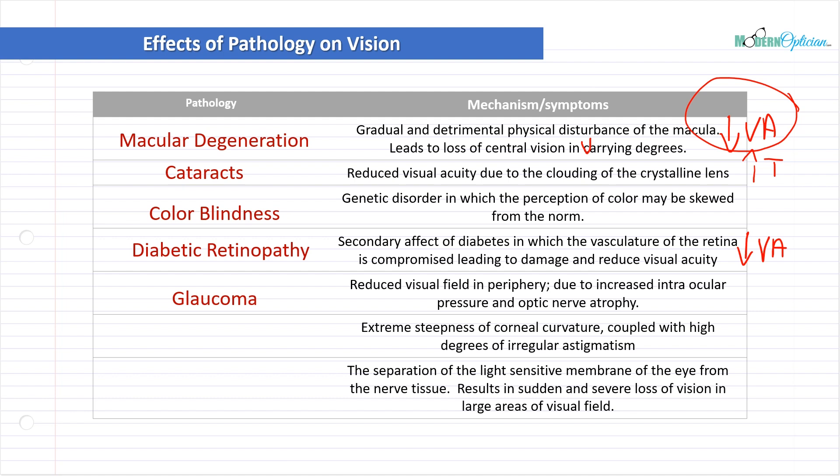Glaucoma: reduced visual field in the periphery due to increased intraocular pressure and optic nerve atrophy. If we know the patient has glaucoma, we have to start considering their visual field results, because that is going to have an impact on their visual performance and visual comfort. Glaucoma patients don't necessarily see as well as non-glaucoma patients — makes sense.